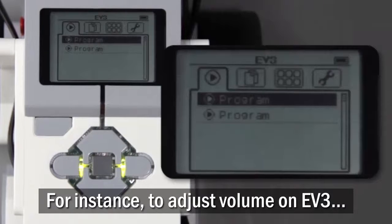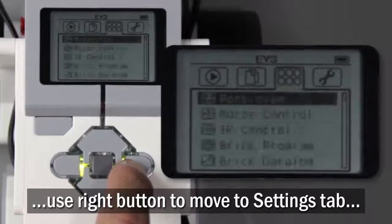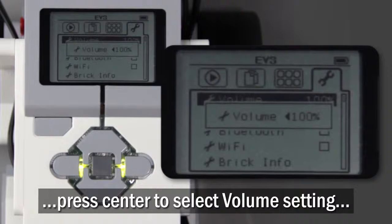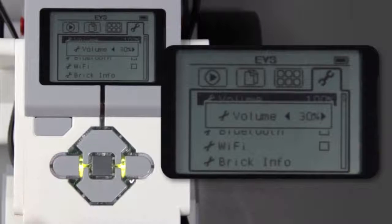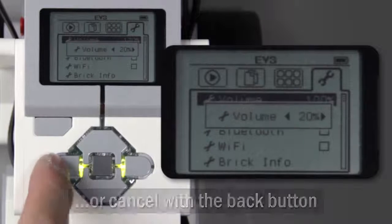For instance, to adjust the volume on the brick, you would use the right button to move the selected tab over to the settings tab, press the center button to select the volume setting, and then use the left and right buttons to change the volume. You could then press the center button again to save your selection, or back to cancel it.